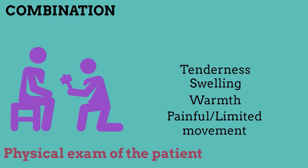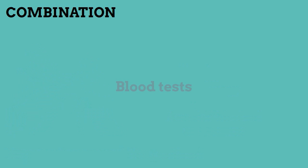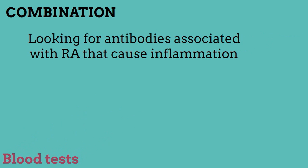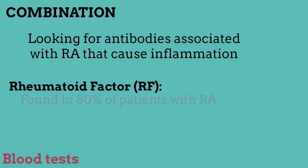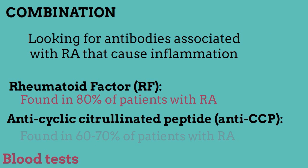Number three: blood tests are conducted to measure inflammation levels via antibodies associated with RA — rheumatoid factor (RF), an antibody found in 80 percent of RA patients, and anti-cyclic citrullinated peptide (anti-CCP), which occurs in 60 to 70 percent of RA patients.